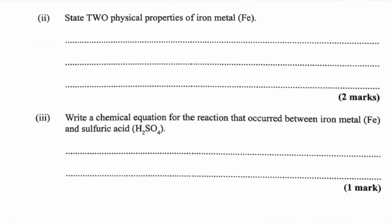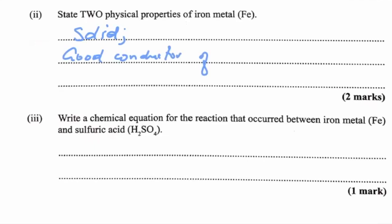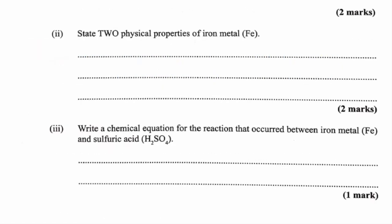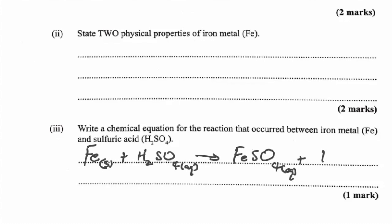Two physical properties of iron metal: it is a solid at room temperature, and it is a good conductor of heat and electricity. We could also say it has a high melting point and high boiling point. The chemical equation for the reaction between iron metal and sulfuric acid: Fe(s) + H₂SO₄(aq) → FeSO₄(aq) + H₂(g). That's balanced.